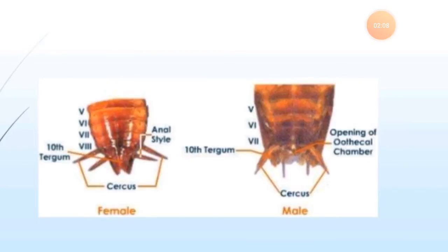Generally, the body wall is made up of the cuticle, epidermis, and basement membrane. The cuticle is impermeable to water because it is a thick, non-cellular surface layer. The epidermis consists of a single layer of columnar cells, including some glands.